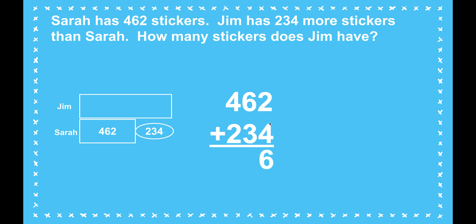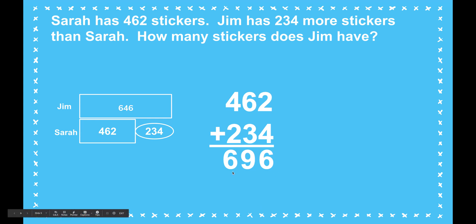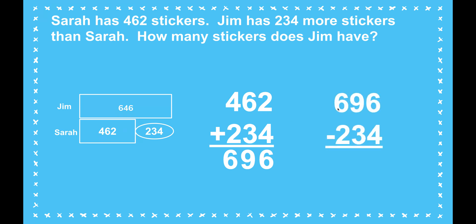I'm going to add the ones first. 2 plus 4 is 6; 6 plus 3 is 9; and 4 plus 2 is 6. No regrouping — that was easy. But I still want to be a mathematician and attend to precision. I'm going to check my addition by subtracting using the opposite operation. I'll take the total and subtract either part: 696 minus 234. 6 minus 4 is 2; 9 minus 3 is 6; 6 minus 2 is 4. I got back to what Sarah had — Jim's total minus the 234 more he has than Sarah gives us Sarah's amount. 696 minus 462 confirms the answer.